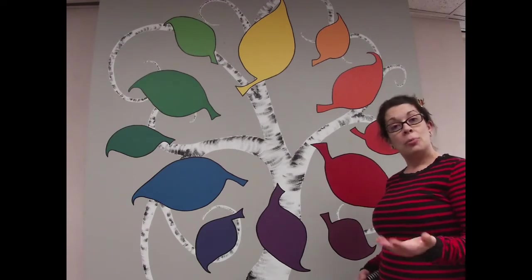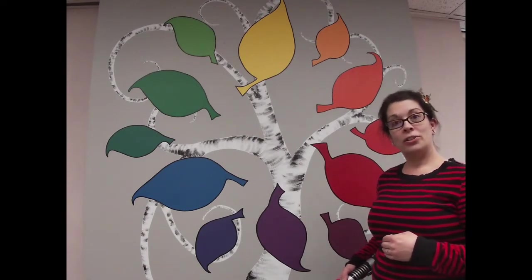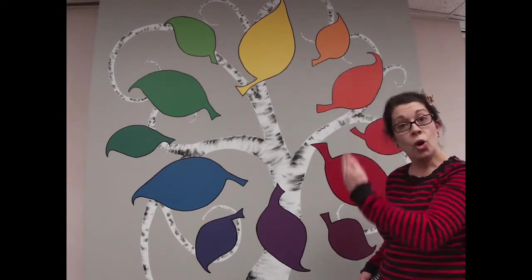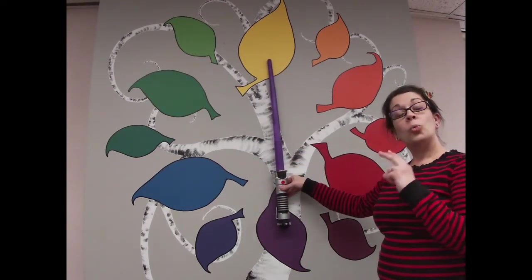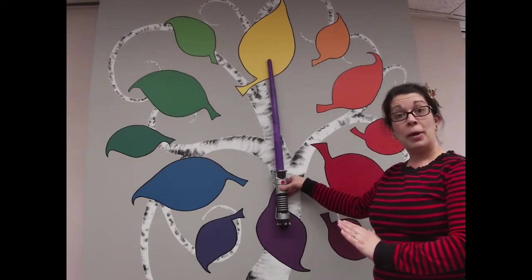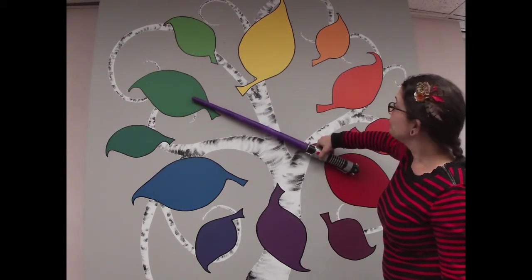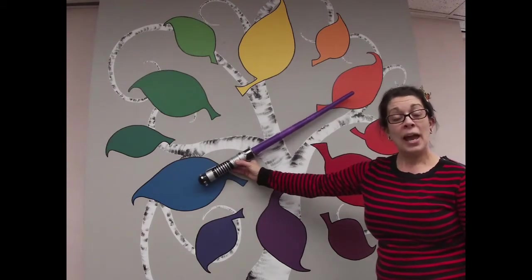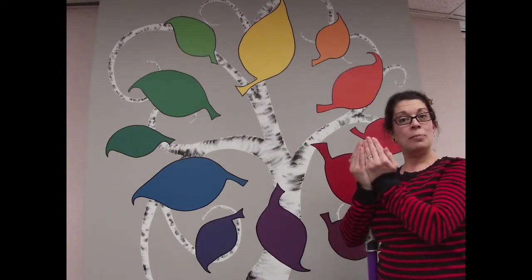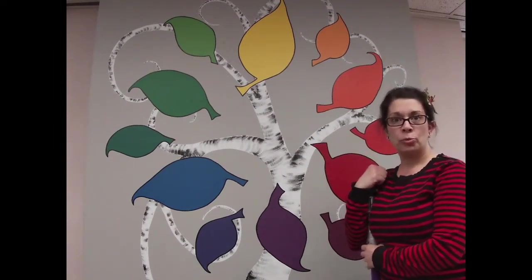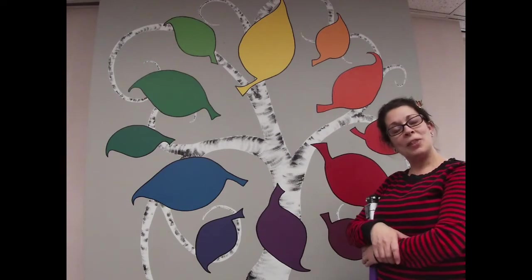Our final vocabulary word for this video and for color theory is complementary colors. Complementary colors are across the color wheel from each other. So yellow and violet are one of three main complementary colors. Yellow and violet, green and red, blue and orange. These colors are fun because when you put them next to one another, they make each other stand out and pop and look really vibrant. But when you mix them together, they create three different shades of brown. We'll experiment with that pretty soon.